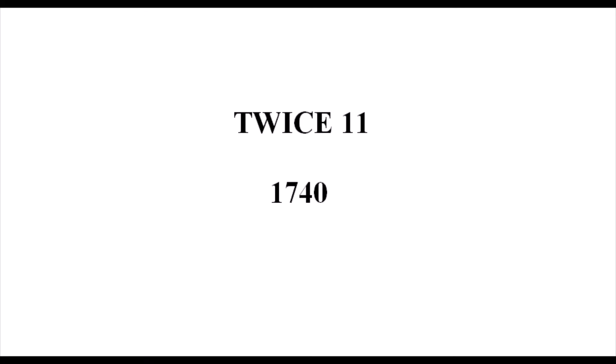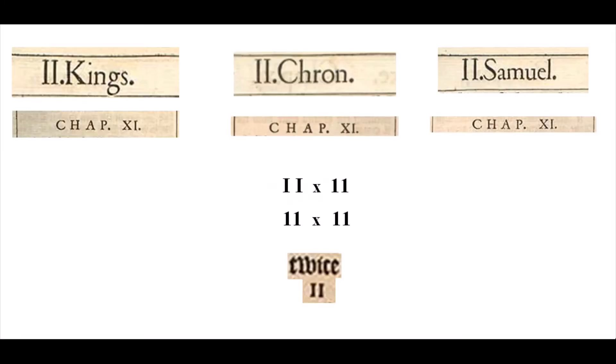Many of the codes I'm going to be showing fall within a pattern of twice 11 and 1740. I know it can get monotonous, but I'm trying to prove design and there is a point to it all, so please bear with me. In the Old Testament of the King James Bible, there are three books comprised of two each: Kings, Chronicles, and Samuel. Twice 11 has become more relevant as I've looked for codes, so it made sense to look at the second books, chapter 11.